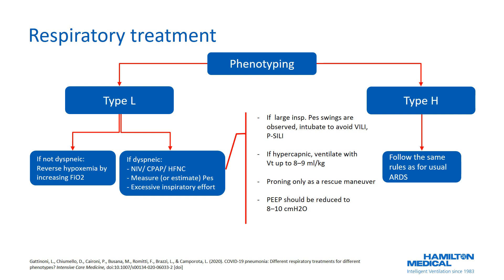For hypercapnic Type L patients, a tidal volume greater than 6 mL/kg of ideal body weight is suggested — up to 8 or even 9 mL/kg — since respiratory system compliance is nearly normal and these patients can tolerate the increased tidal volume. Prone positioning is recommended only as a rescue therapy, and PEEP should be limited to 8–10 cmH2O. It is also recommended not to rush the weaning process, as the disease may take a few weeks to resolve.